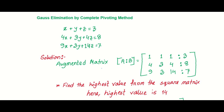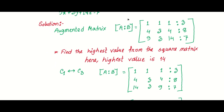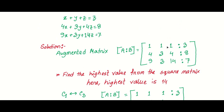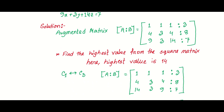First of all, we form the Augmented Matrix. We write the system of equations A, X, Y, Z, R as an augmented matrix. The augmented matrix is a 3 by 3 square matrix with the constants appended.